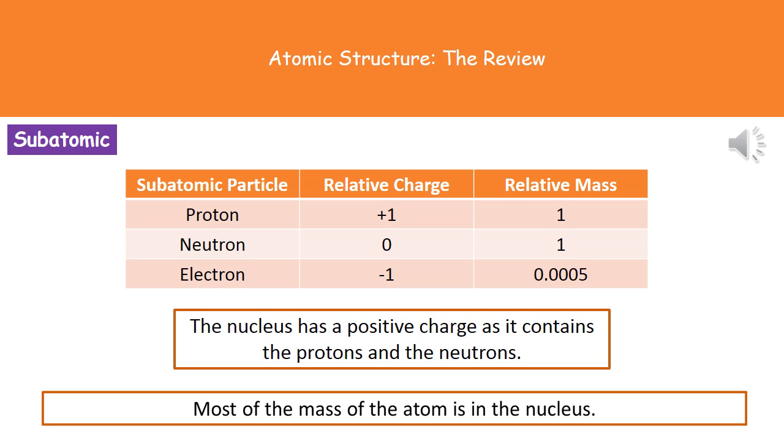And then finally our electrons, these have a charge of -1, and their mass is very small, 0.0005. So what we actually find is if we think about the structure of our atom, in our nucleus we've got our protons and our neutrons, which means that the nucleus itself has a positive charge. And it also is where we have the mass, because if we look at the two values there for our proton and neutron, they both have a relative mass of one.